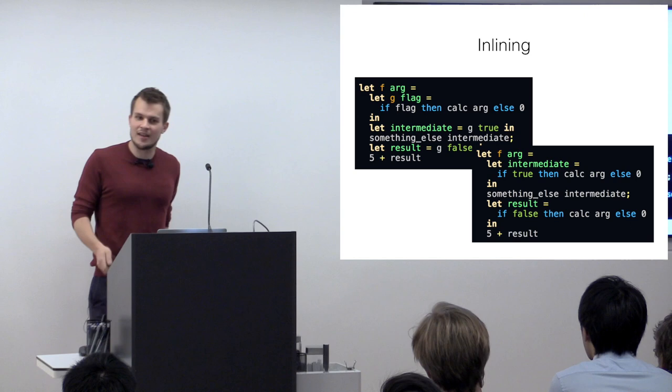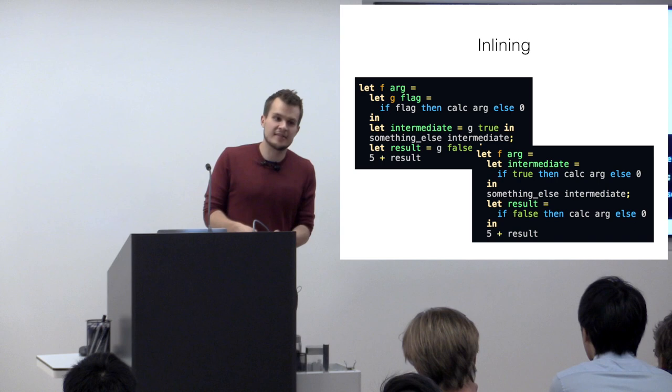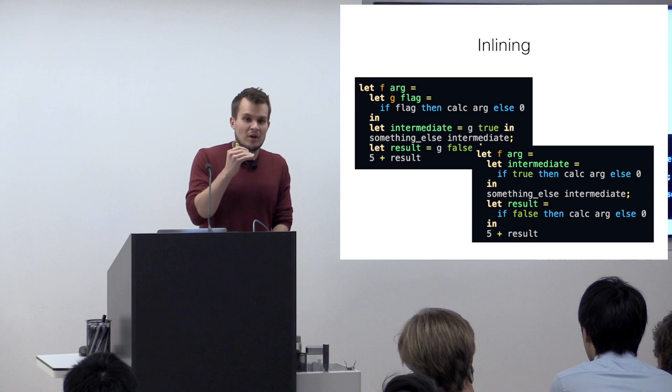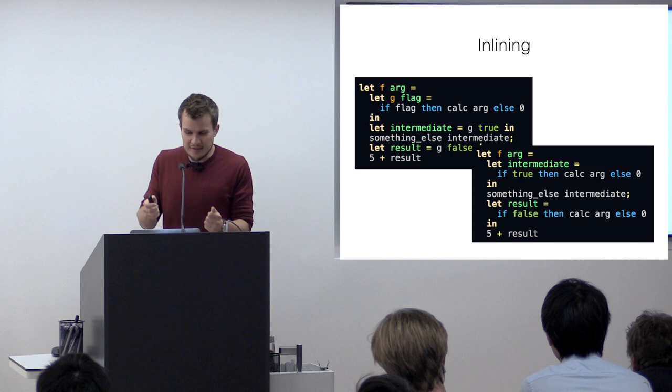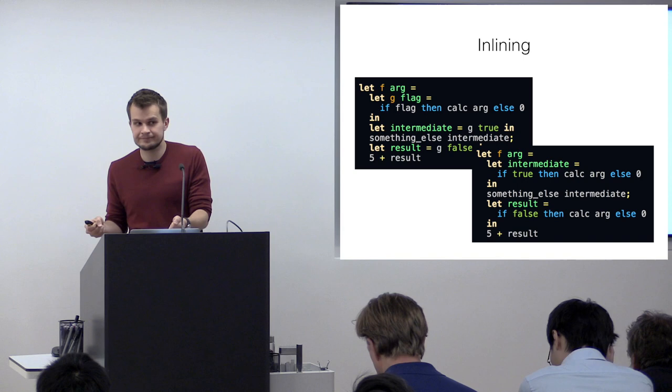So now we can use function calls everywhere in our code and the compiler will inline everything away — great, super fast. But it turns out it's also not that simple, because the trickiest bit about getting inlining right — which is what the tools and compilers team at Jane Street spends most of its time on — is coming up with good heuristics about when to inline and when not to. If you just inline all the time, your program will actually be a lot slower than if you hadn't inlined at all. The real challenge is: when is it beneficial to inline versus when is it not?